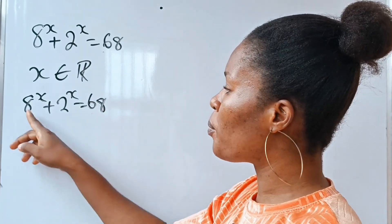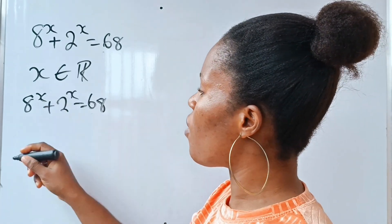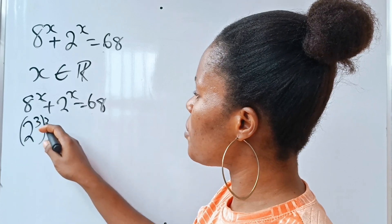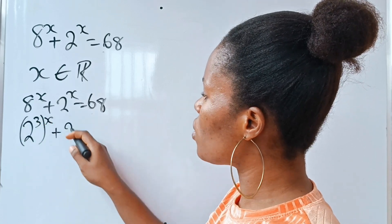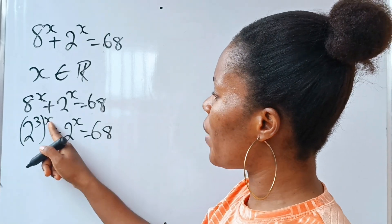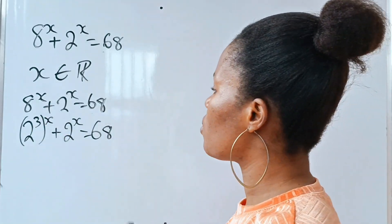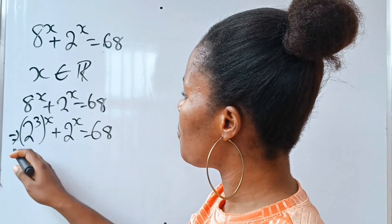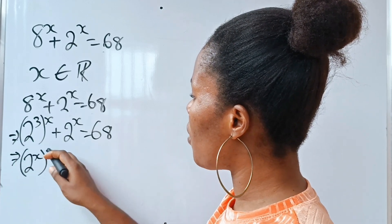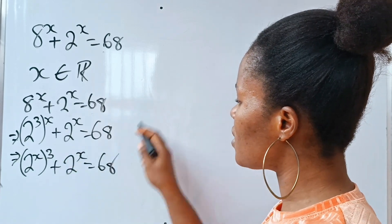By looking at this, notice that you can put it in the same base. Because 8 to the power of x can be written as 2 to the power of 3, raised to the power of x. So 8^x + 2^x = 68 becomes 2 to the power of x, raised to the power of 3, plus 2 to the power of x, is equal to 68.